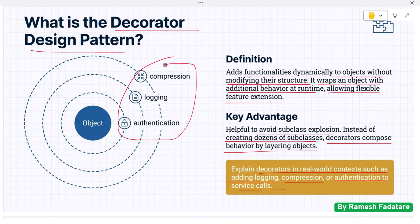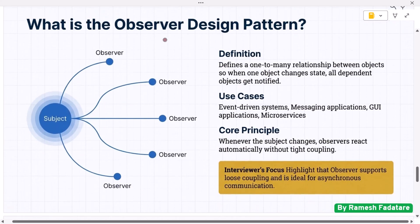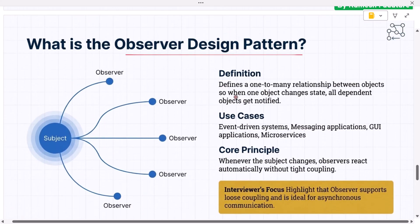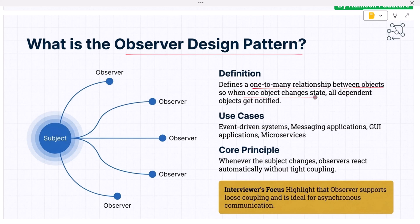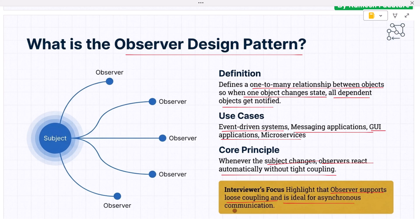Next: what is the observer design pattern? Observer defines a one-to-many relationship between objects so that when one object changes state, all dependent objects get notified. It is widely used in event-driven systems, messaging, GUI applications, and microservices. Whenever the subject changes, observers react automatically without tight coupling. Interviewers expect you to highlight that observer supports loose coupling and is ideal for asynchronous communication.